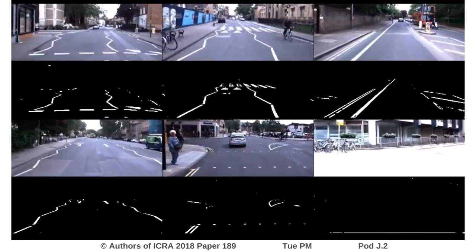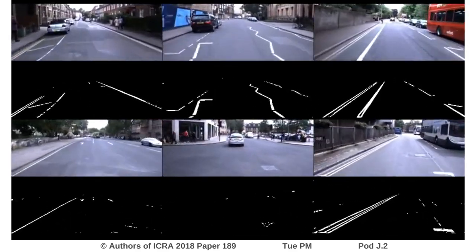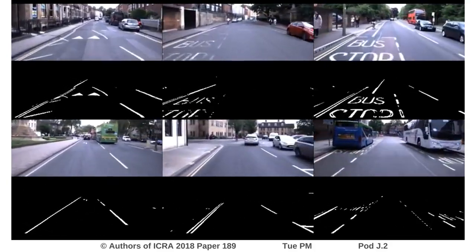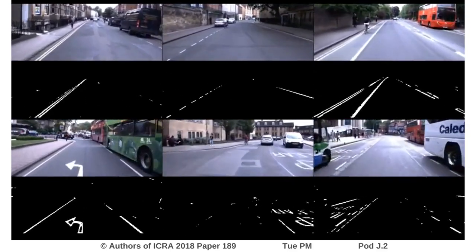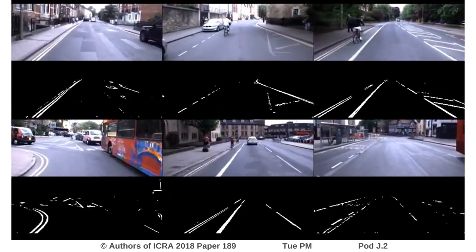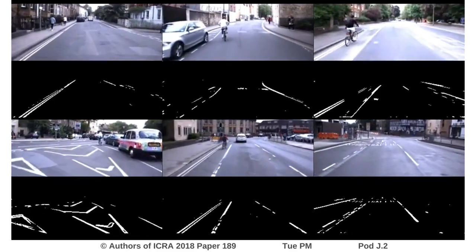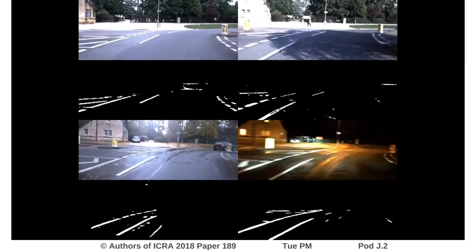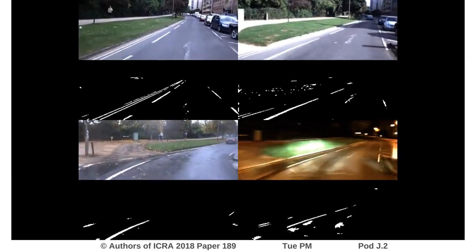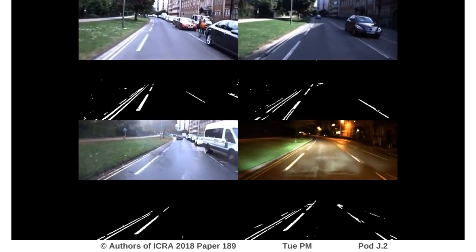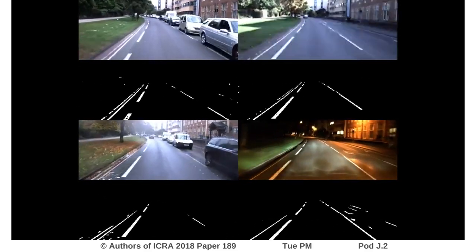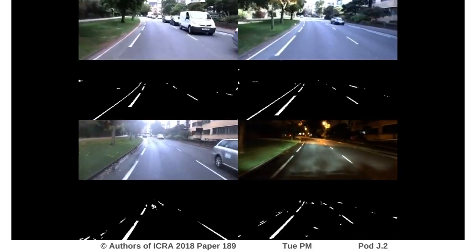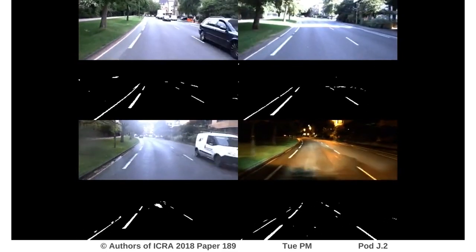We tested our method in a wide variety of traffic conditions and detect all road markings in the scene without limitations to shape or size. We detect the road markings at the same location at different times, even with significant changes in weather and lighting. This framework provides a first step towards classification of road marker types to support high-level scene understanding, mapping, and planning.